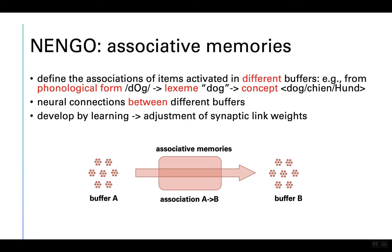Associative memories, which are neuron buffers themselves, model the transformation of one item to the next from one buffer to the next. For example, associative memories define associations for different items across different buffers. A phonological form of a word can be defined in buffer A — that is the acoustic structure of the word, for example 'dog.'